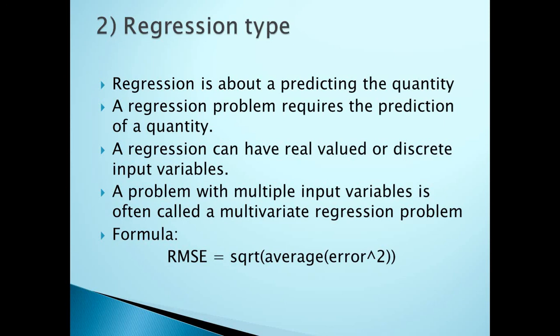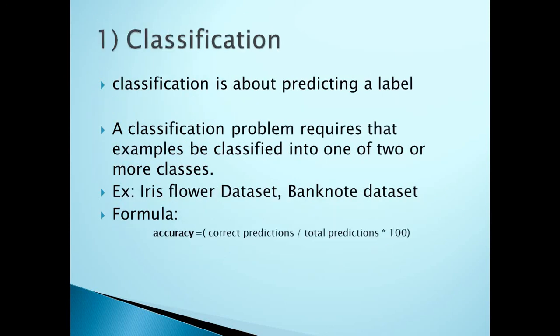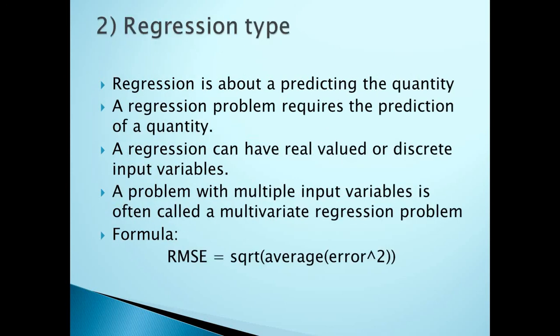Classification is about predicting a label. If there are two values — like zero or one in the banknote dataset — it is called a binary or two-class classification problem. If there are many classes, it is called a multi-class classification problem.